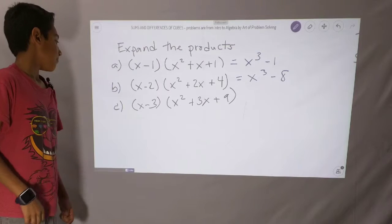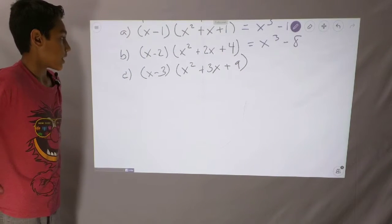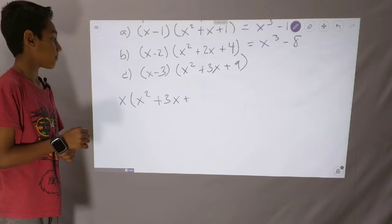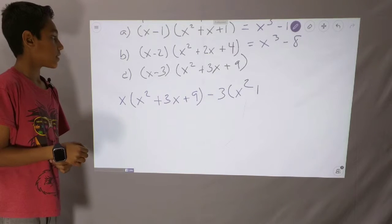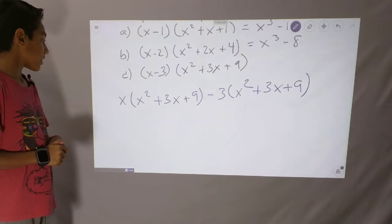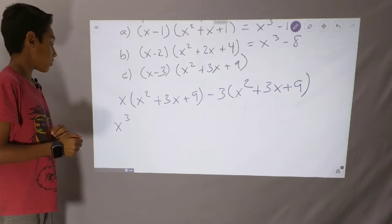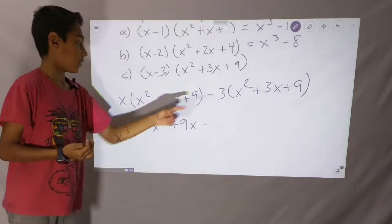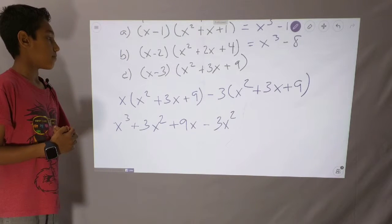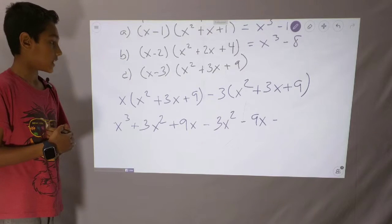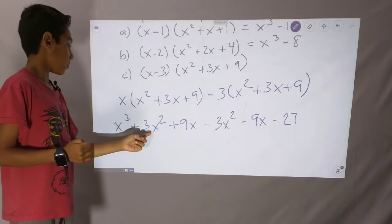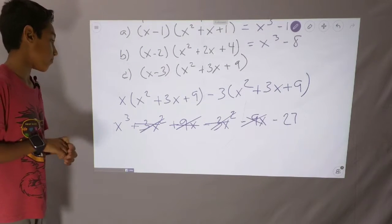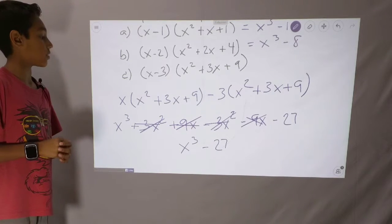Now we go on to part c: x minus 3 times x squared, plus 3x, plus 9. As we did with b and a, we write x times x squared plus 3x plus 9, and minus 3 times x squared plus 3x plus 9. x times x squared is x to the third, plus 3x squared, plus 9x. Then minus 3x squared, minus 9x, and minus 27. 3x squared minus 3x squared cancels out, and 9x minus 9x is 0. So we're left with x to the third minus 27 for c.